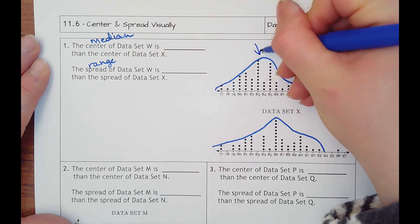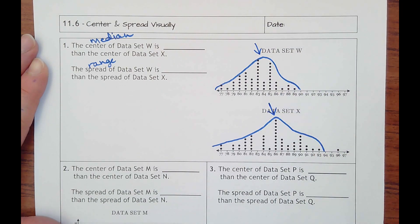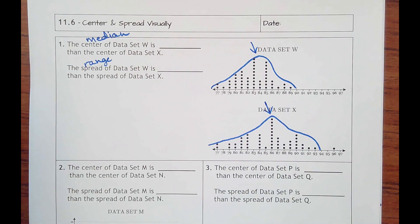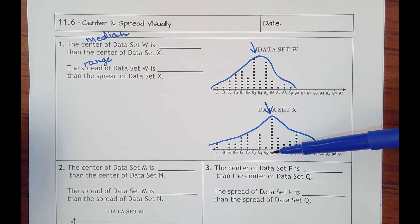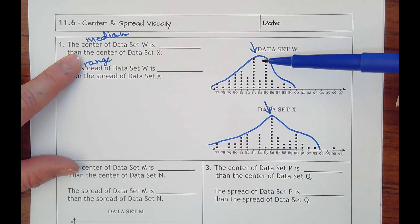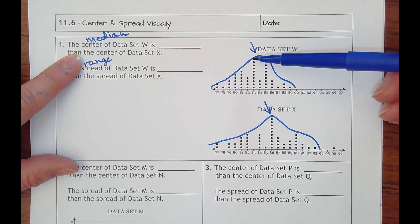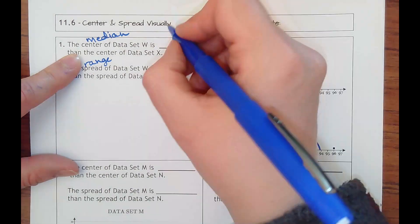Wherever your highest point is at, that's usually like your center, your median. And so I can tell that these scores are lined up. Here's 86, here's 86. So I would say the center of data W is less than what X's is.